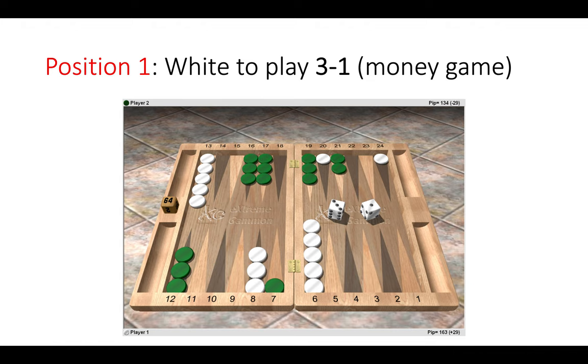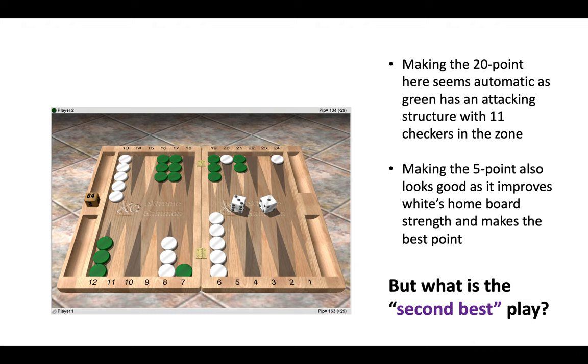Here it looks obvious to make the 20 point. Green has 11 checkers in the zone, has an attacking structure. We don't want to get blitzed off the board. Also, on the other side of the board, making the five point looks a good choice with a three-one. We make the best point. We strengthen our home board.